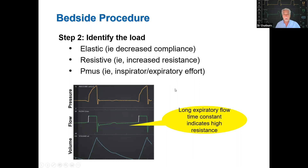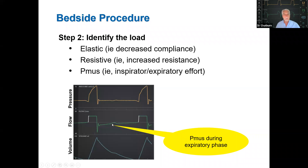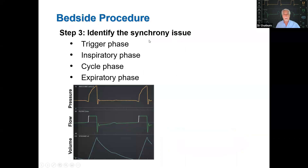The second step is to identify the load. Here we see a high initial pressure — from the equation of motion, that means high peak flow hitting high resistance. We also see a long expiratory time constant, indicating high resistance. In the expiratory flow waveform, there's a little bump toward positive flow — our indication of an inspiratory effort, an unsuccessful one, during the expiratory phase. The synchrony issue is a failed trigger: the patient made a trigger effort, but flow did not go through zero so the ventilator didn't detect it.